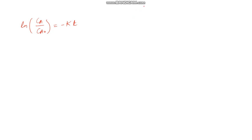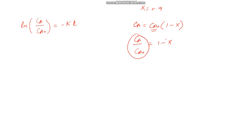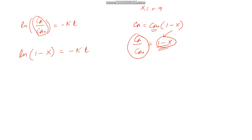We have the hint that X equals 0.9. Writing conversion in terms of concentration: CA = CA0 × (1 − X), which means CA/CA0 = 1 − X. Since we have CA/CA0 in our equation and it equals 1 − X, we substitute it in. So the equation becomes ln(1 − X) = −kT.